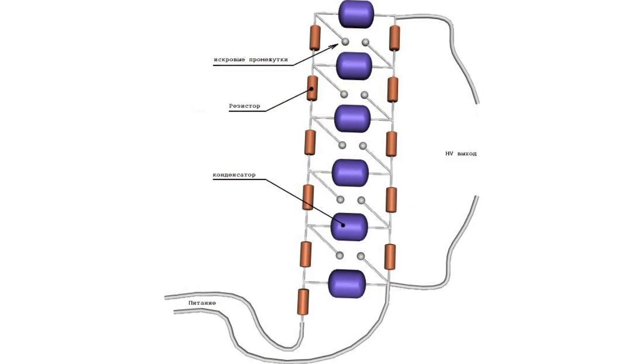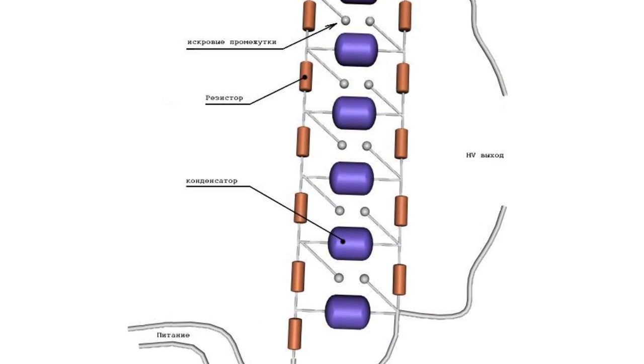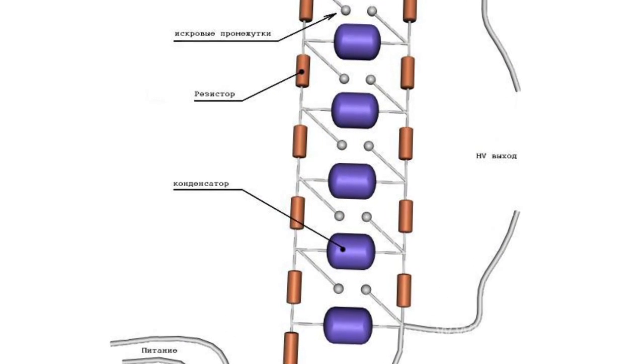Marx's generator is a device used to generate high voltage pulses. The operation of this device is based on the following principle: capacitors connected in parallel are first charged with electric current, and then connected in series with the help of various switching devices. This results in output voltage increasing in proportion to the number of connected capacitors.